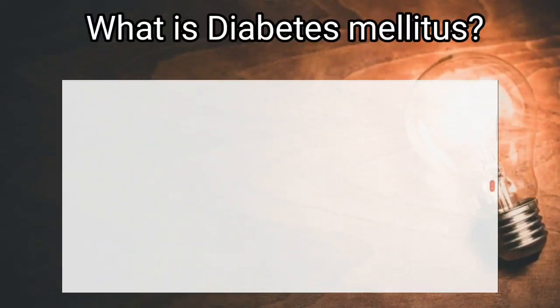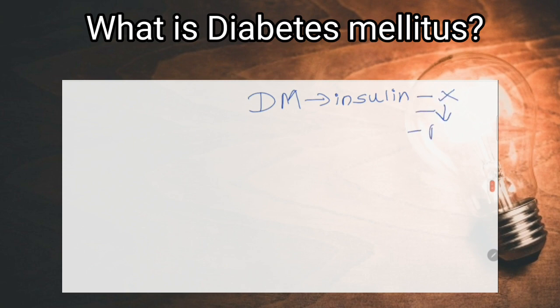What is diabetes mellitus? A syndrome of chronic hyperglycemia due to relative insulin deficiency, resistance, or both.